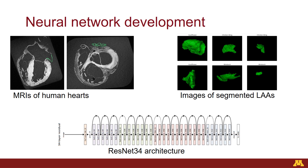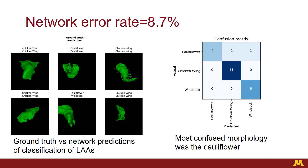With regards to our neural network, it is a ResNet34 architecture, and it trained for probably less than 10 minutes, so it was pretty simple to set up. Our network error rate came out to be 8.7%, which means that over 90% of the time the neural network was able to identify what type of left atrial appendage was seen in the image.